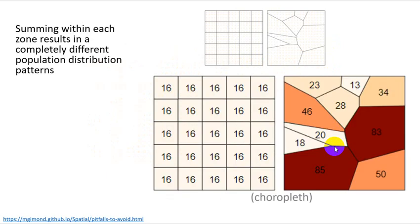So if we sum between each of these, we've got 16 people living in each one of the five kilometer by five kilometer evenly distributed blocks, and we have a very different distribution of population if we sum the number of people in the more irregular areas. Here we're just applying a choropleth color ramp to each one.